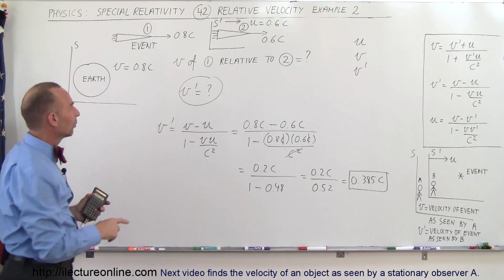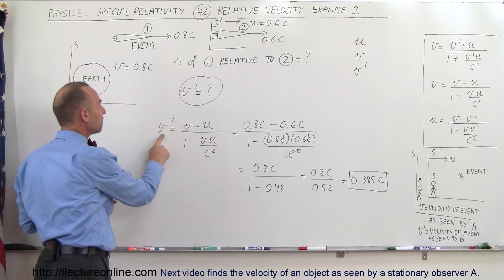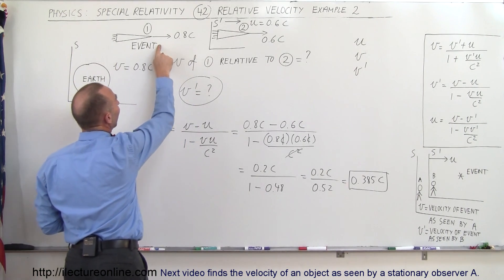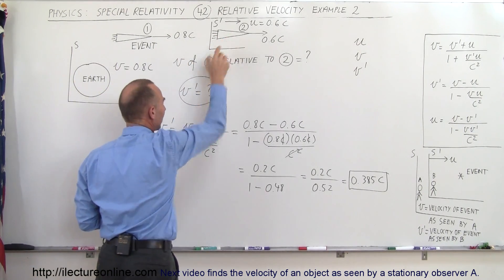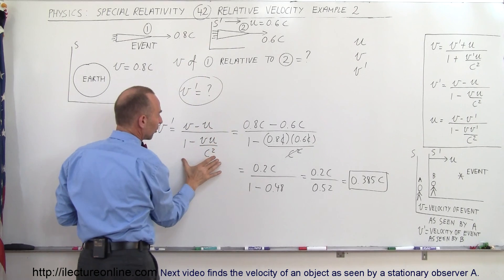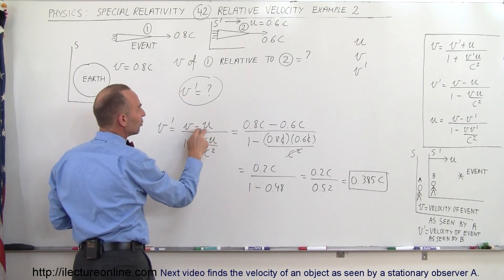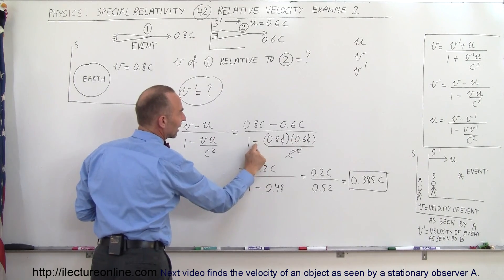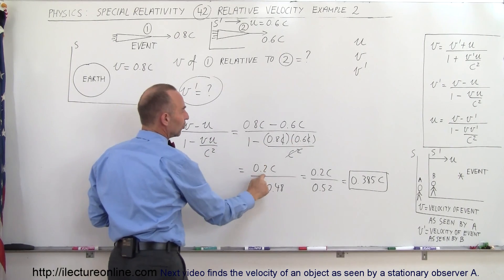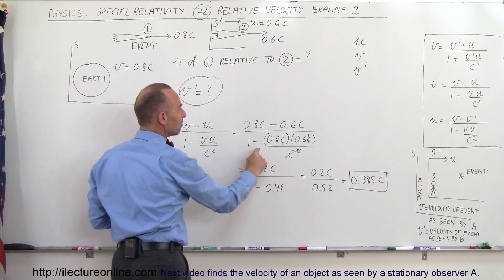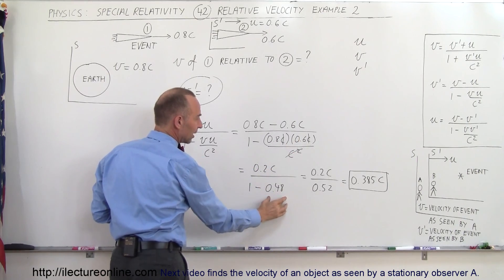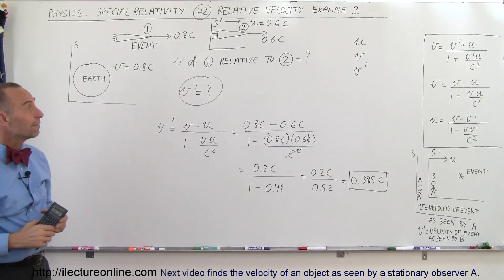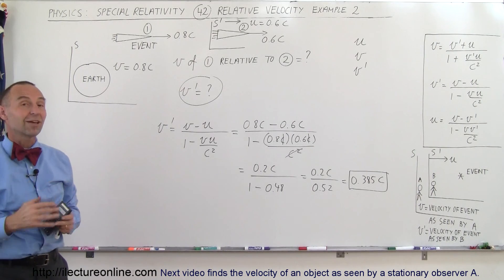To recap: we're looking for V', the velocity of the event (Spaceship 1) as seen by the moving reference frame (Spaceship 2). Use the V' form of the equation, plug in V and U — both positive, but we subtract in the numerator. That gives 0.2C in the numerator and 1 minus 0.48 equals 0.52 in the denominator, yielding the final velocity of 0.385C.